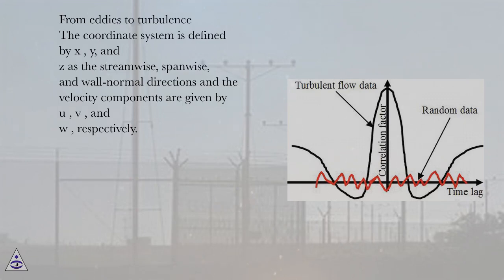From eddies to turbulence. The coordinate system is defined by x, y, and z as the streamwise, spanwise, and wall normal directions, and the velocity components are given by u, v, and w, respectively.